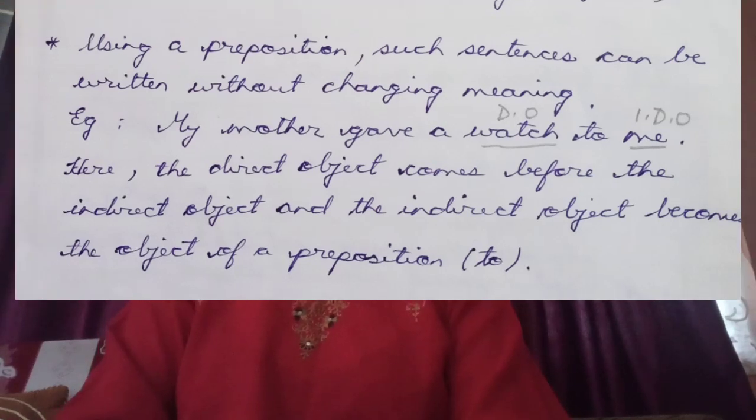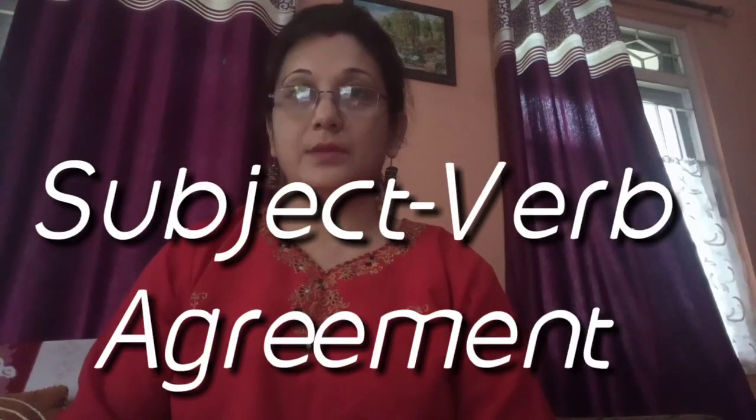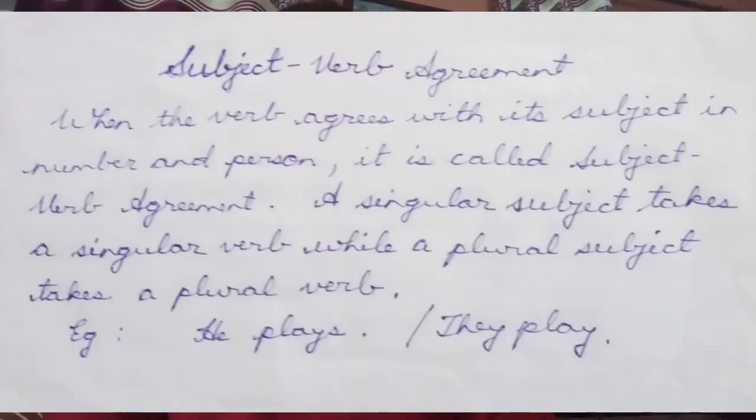So now we see that the direct object — the watch — comes before the indirect object. By use of this preposition, the position changes. Next we come to subject verb agreement. A singular subject takes a singular verb and a plural subject takes a plural verb — and that is in grammar called subject verb agreement.